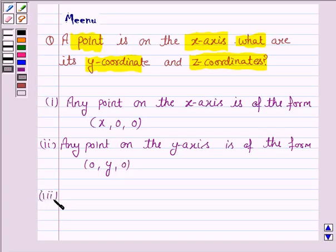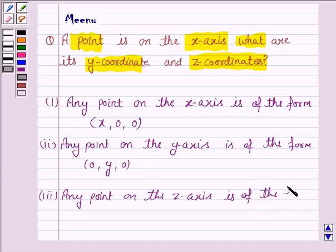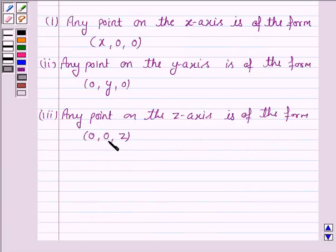The third one is: any point on the z-axis is of the form (0, 0, z). That is, x and y-coordinates are 0, and z is the distance of the point on the z-axis.